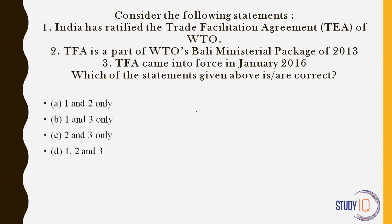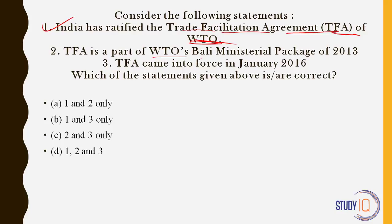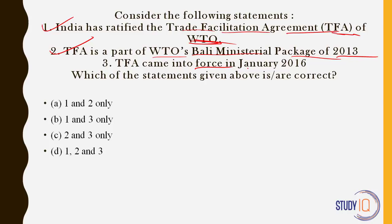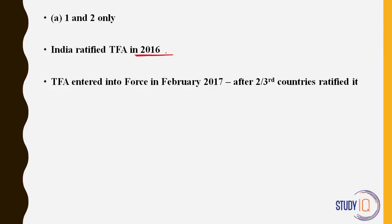Consider the following statements: India has ratified the Trade Facilitation Agreement (TFA) of WTO — yes, India ratified it in April 2016. TFA is a part of WTO's Bali Ministerial Package of 2013 — yes, also correct. TFA came into force in January 2016 — this is wrong. TFA came into force in February 2017, which is why this question was asked. Our answer is 1 and 2 only. India ratified TFA in April 2016, and TFA entered into force in February 2017 when enough countries ratified it — almost three and a half years after being signed at Bali in December 2013.